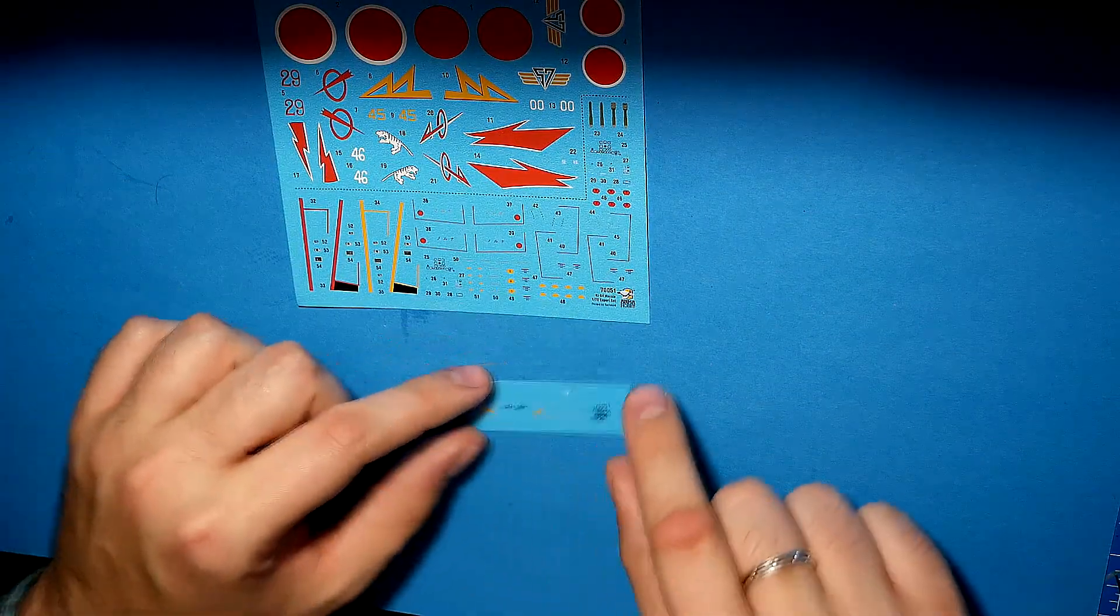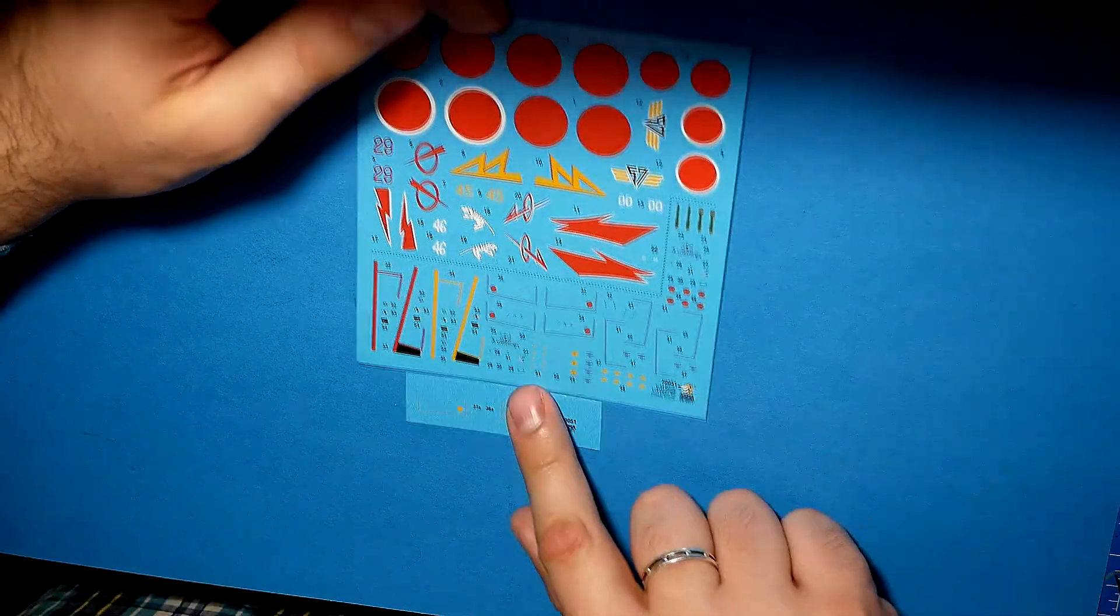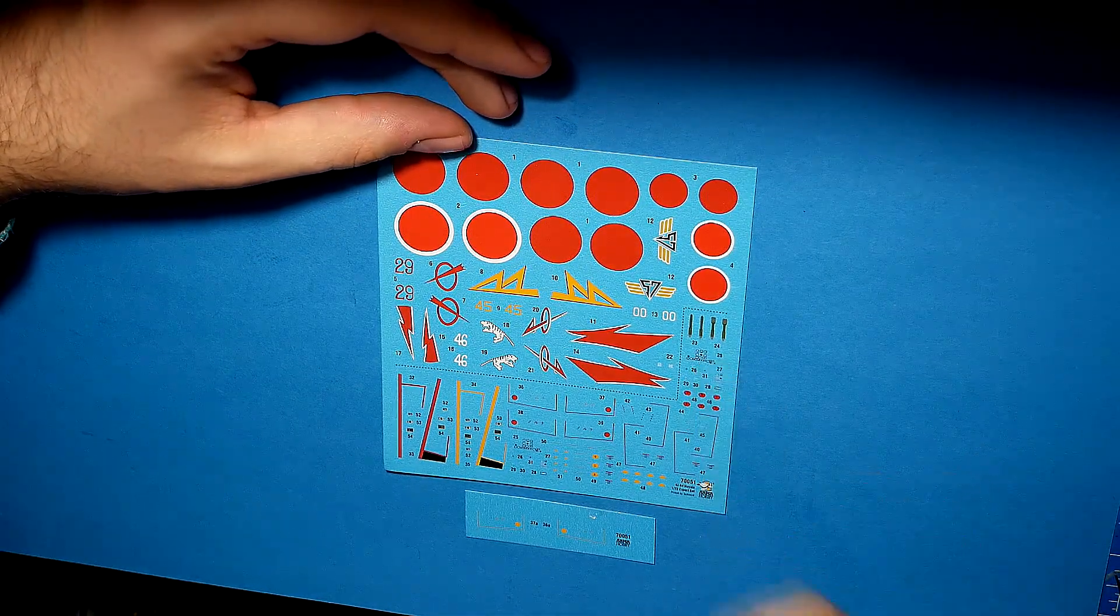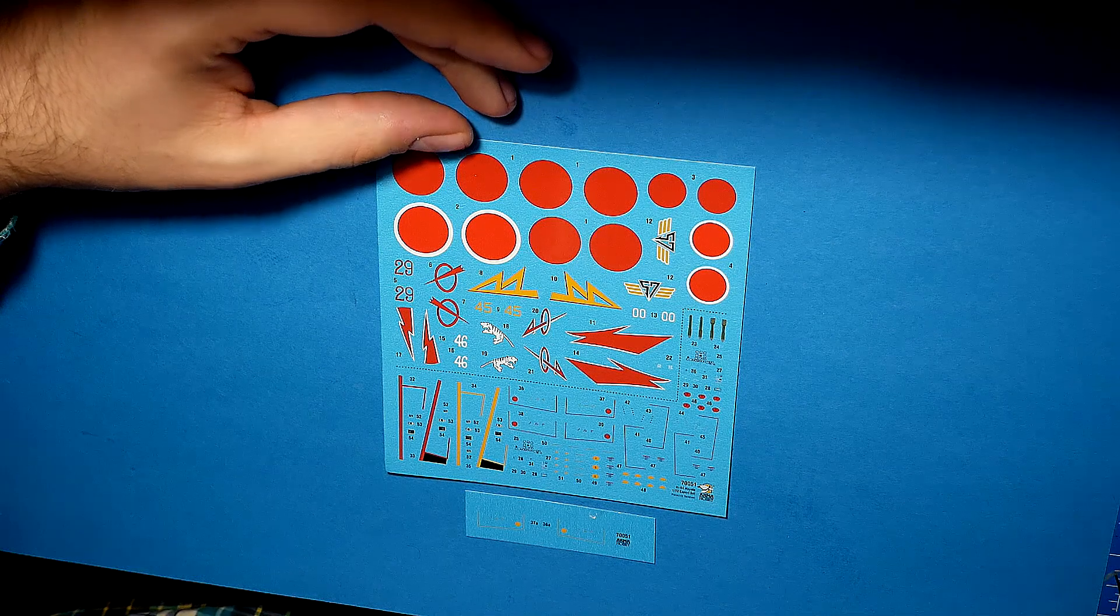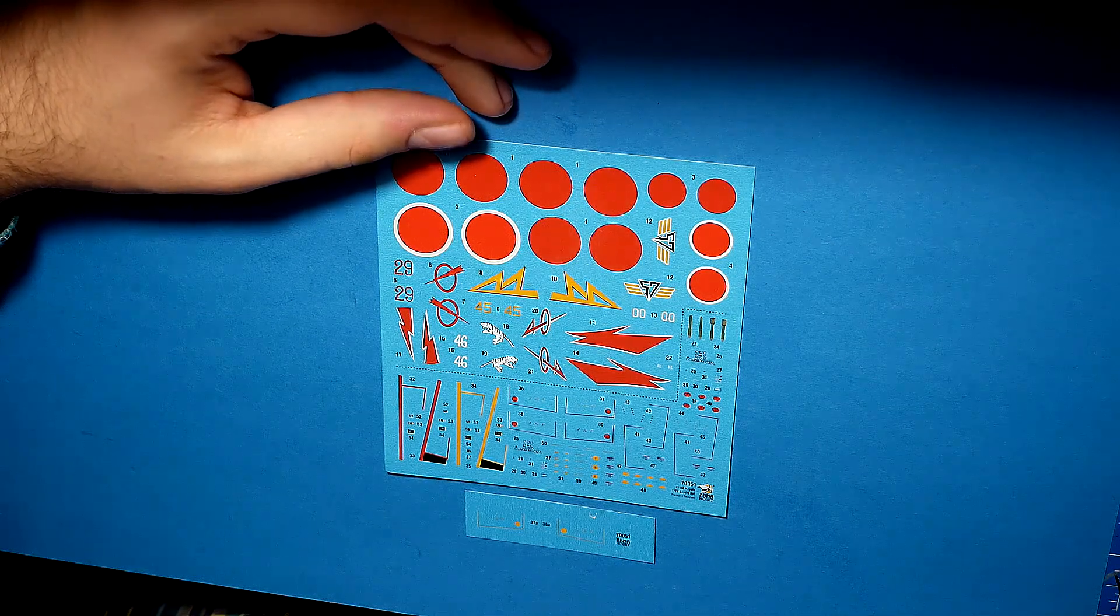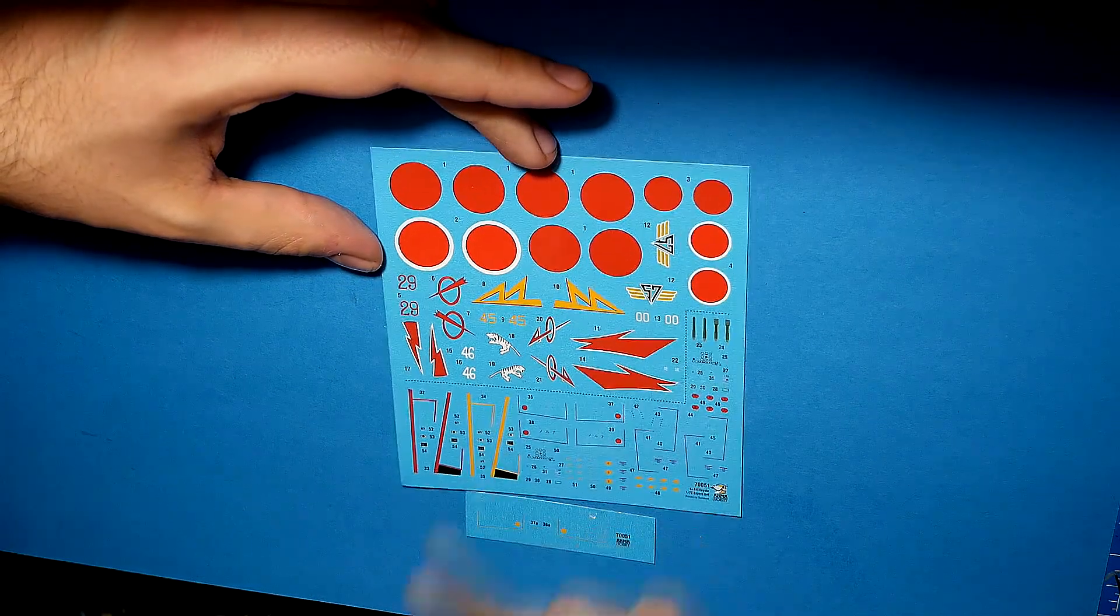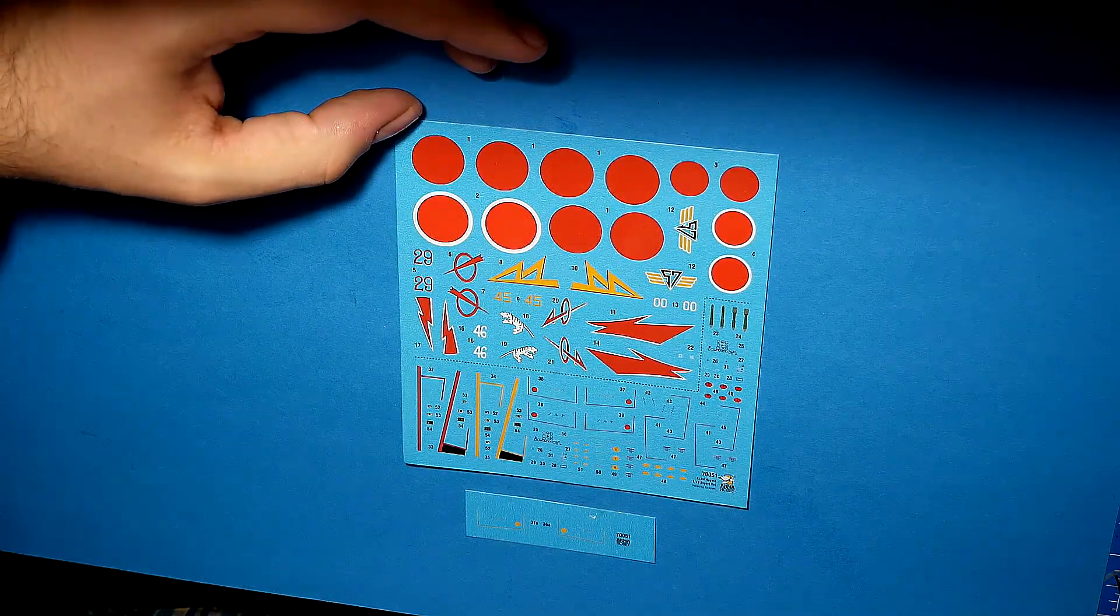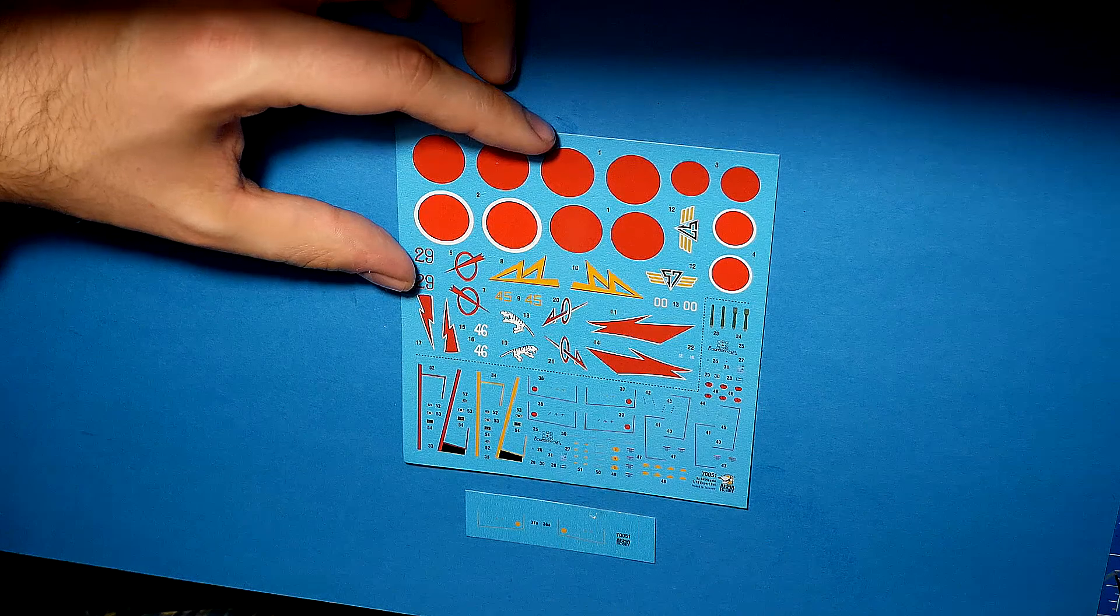The decals are also okay. There are no issues with them. Only that white stripe around the Hinomarus looks a bit weird for me. Maybe the Hinomaru is not exactly in the center of that white. But it's not a big issue, everything should be fine on the model. I hope so. It's Techmod, so the quality should be very good.